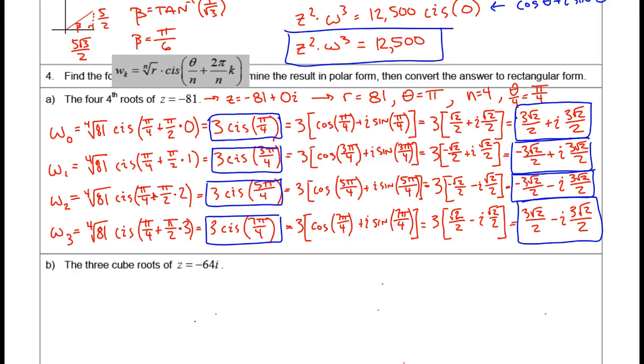All right, folks, there's our answers, and it looks like we have a bunch of 3 root 2 over 2s, and then some of them are positive and some are negative, and we have real parts and imaginary parts.